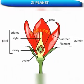Flowering plants undergo an unusual reproductive process in which there are two fertilization events rather than just one. This double fertilization takes place between cells produced in the male reproductive organs, the anthers, and the female reproductive organ, the ovule.